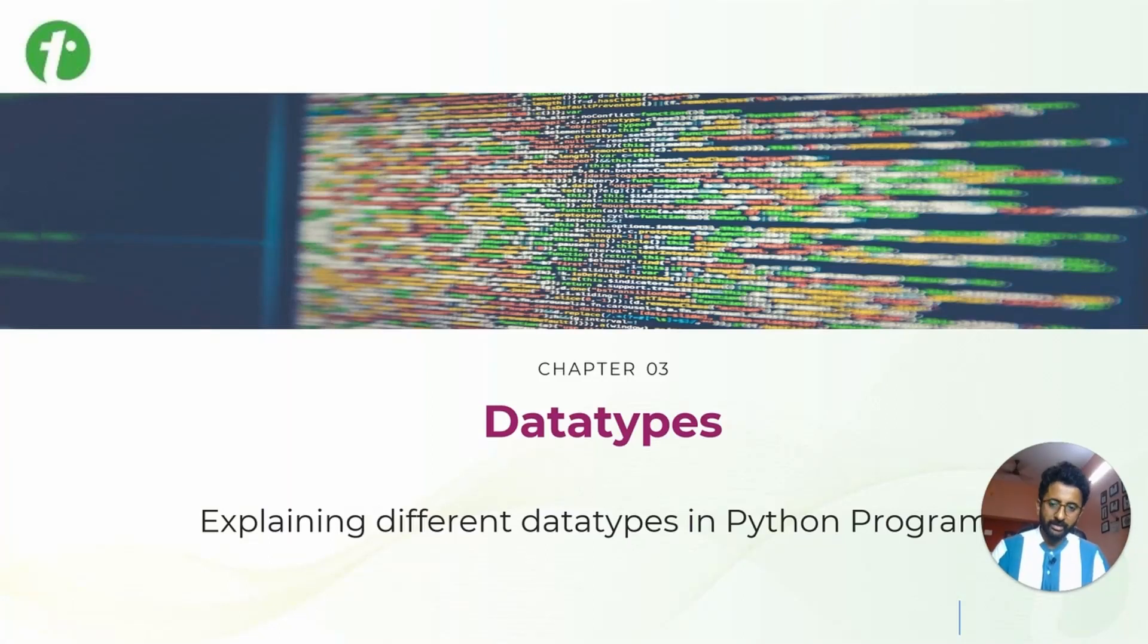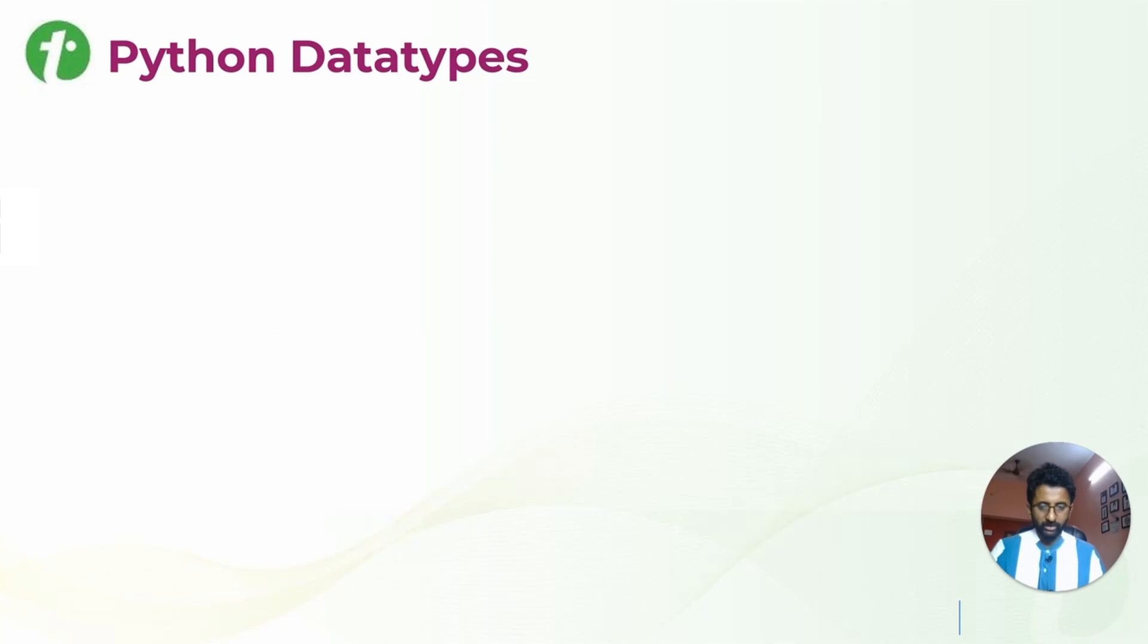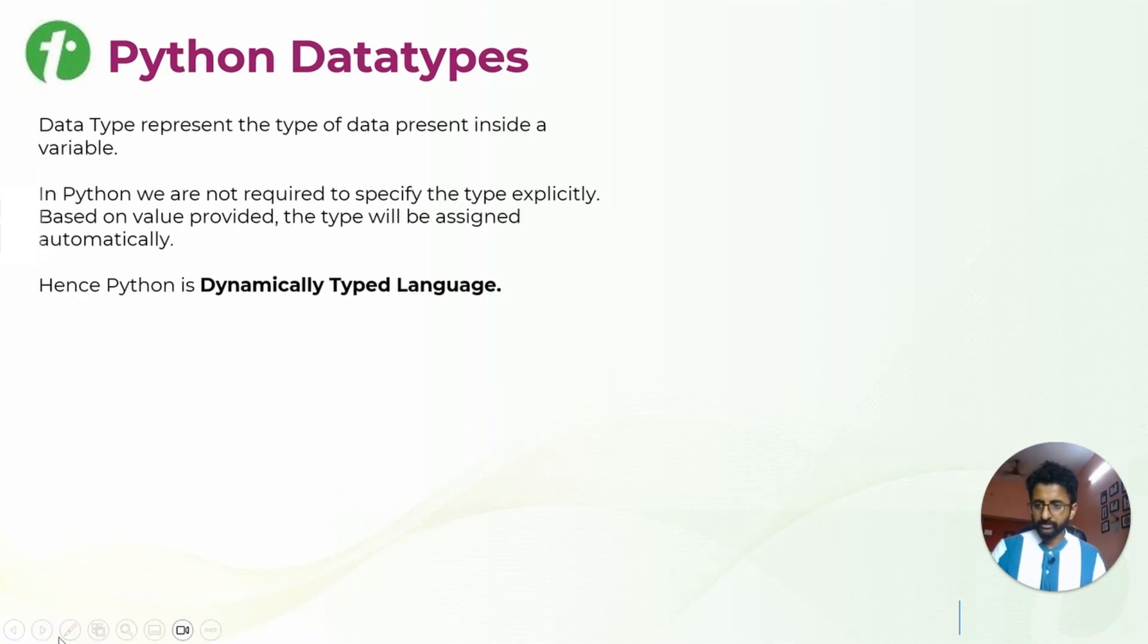Welcome to the next chapter on data types. I will be explaining different data types in Python. Basically, data type represents the type of data present inside a variable. What type of data is inside a variable is given by the data type.